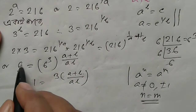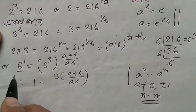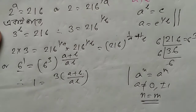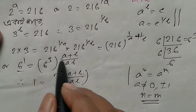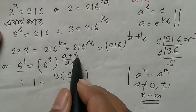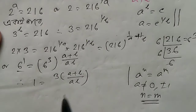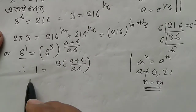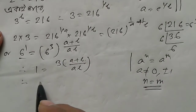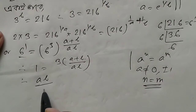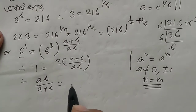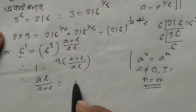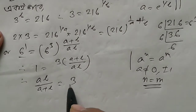So 6 to the power 1 equals 6 to the power 3 times (A plus B) by AB. Therefore AB by A plus B equals 3.